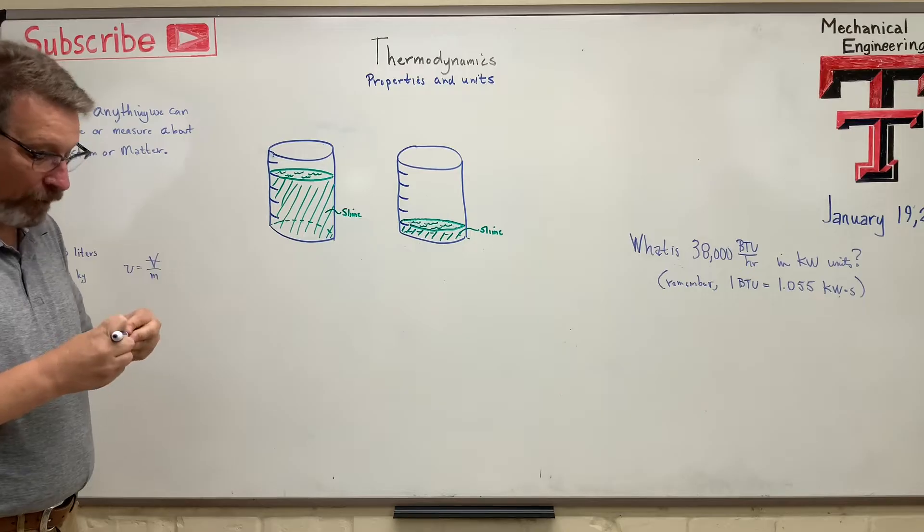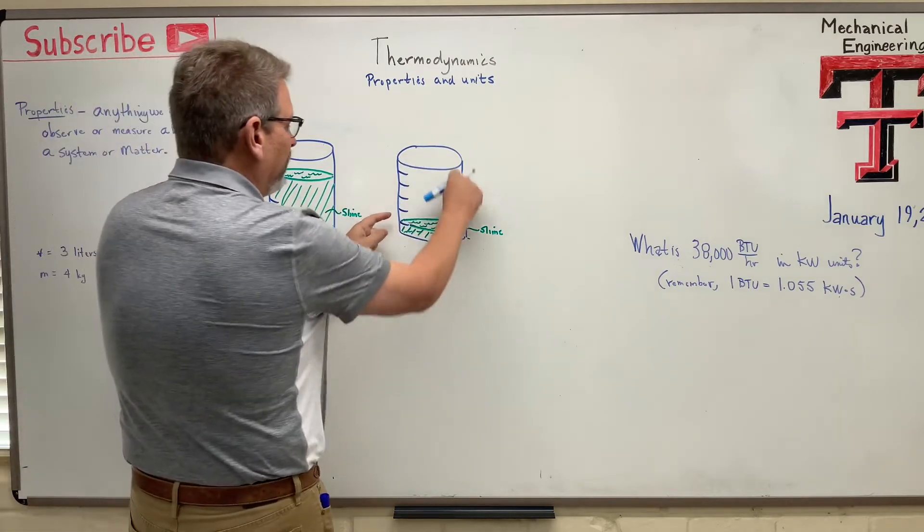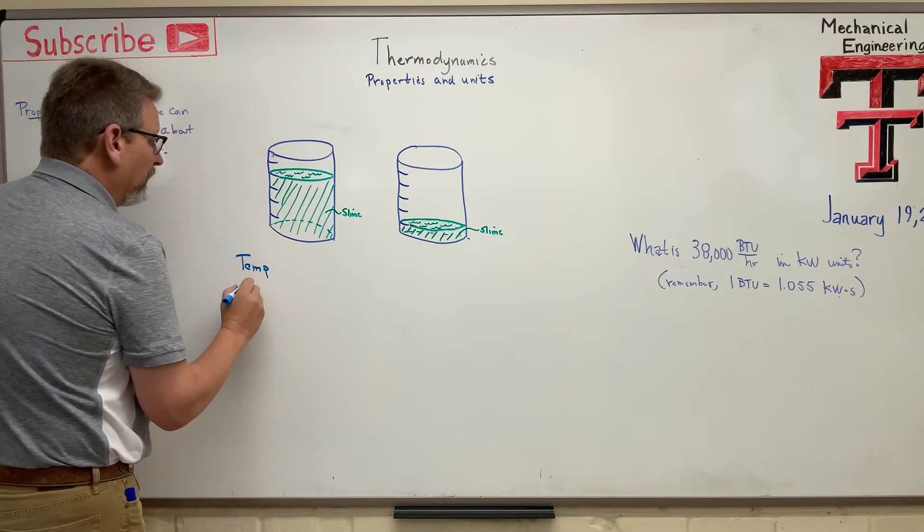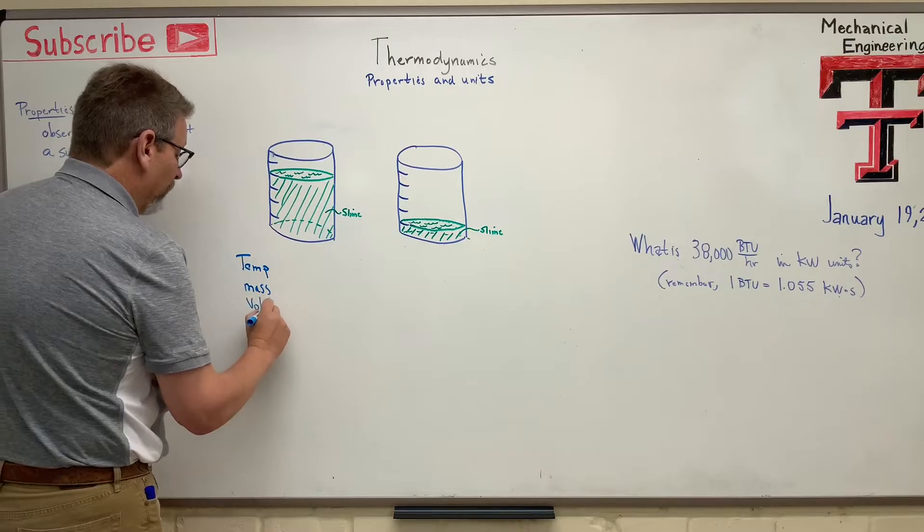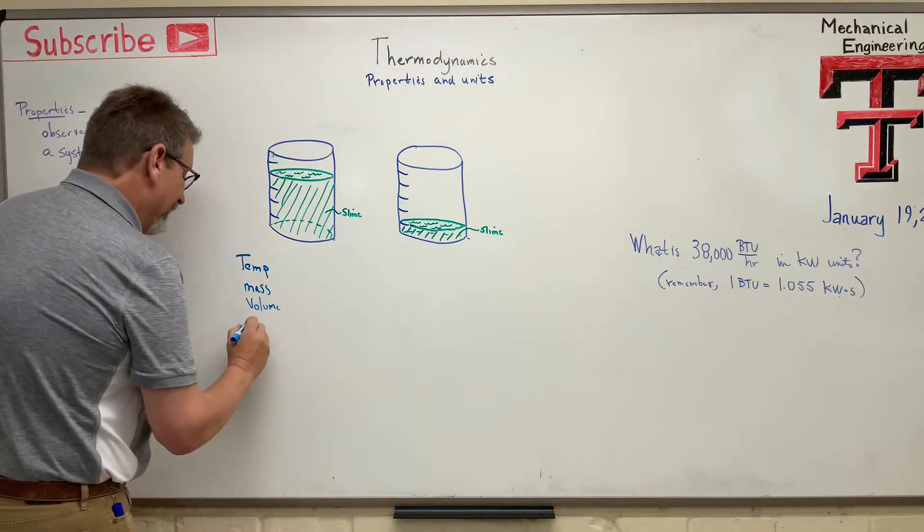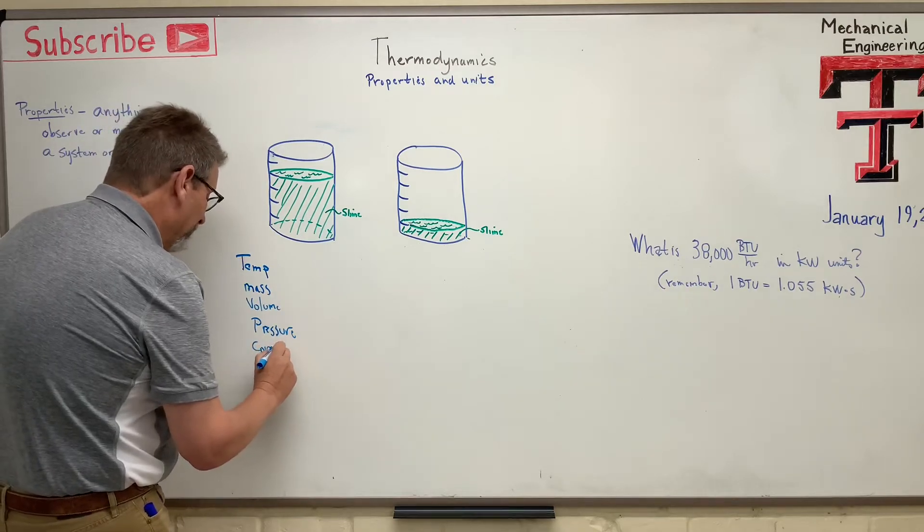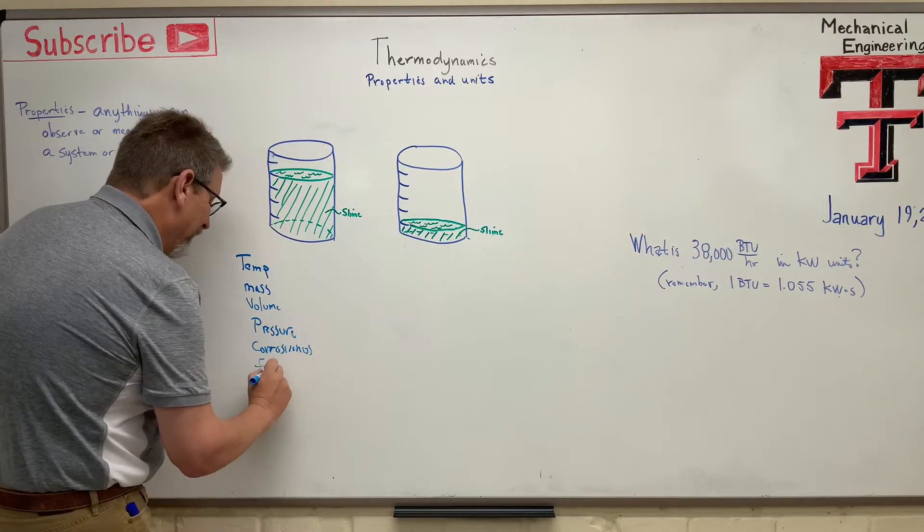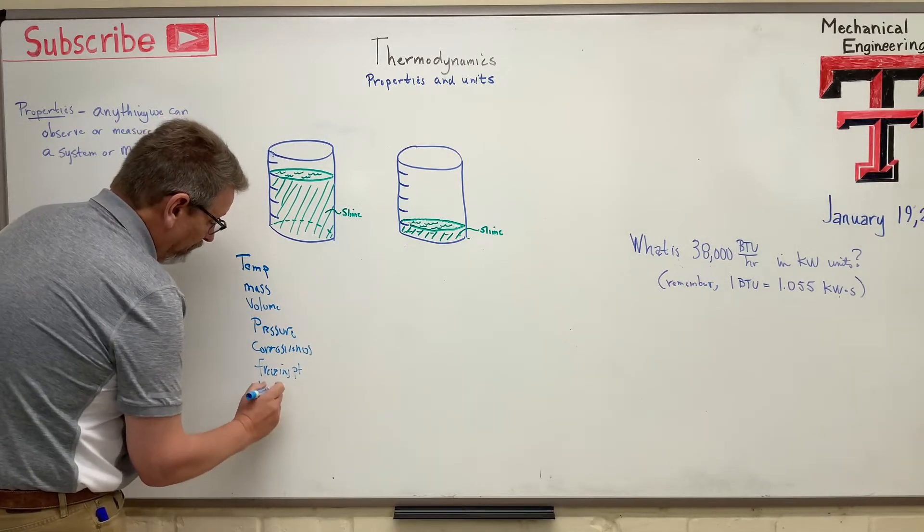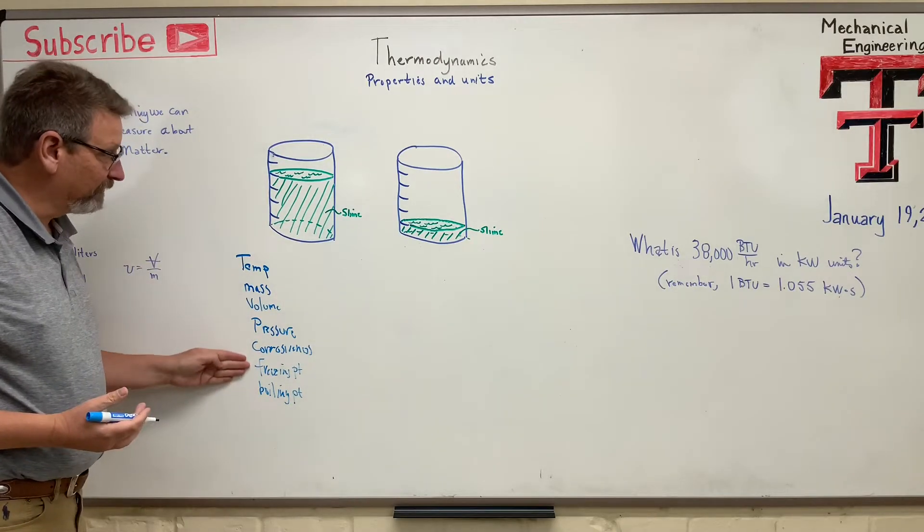What kind of properties might we be able to observe or measure about that matter in those systems? The system is the beaker itself, right? But what can we observe about the matter in those beakers? Well, we could observe maybe its temperature. We could observe its mass or measure it. We could measure its volume, right? Maybe our beakers are delineated here by some kind of volume measurement. We might be able to find out the pressure on it, right? We might be able to find out corrosiveness, freezing point, boiling point, etc., right? We may be able to find out all kinds of different things about that material, okay?